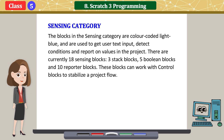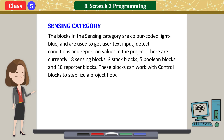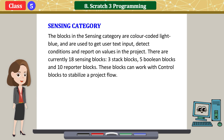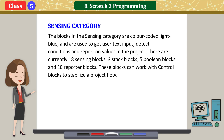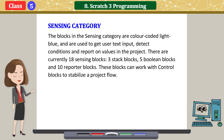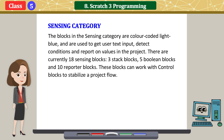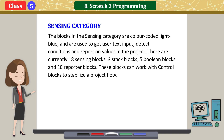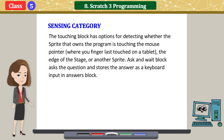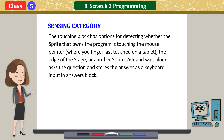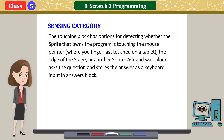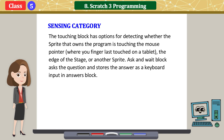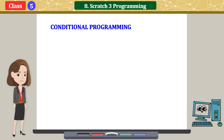Sensing category: the blocks in the sensing category are color-coded light blue and are used to get user text input, detect conditions, and report on values in the project. There are currently 18 sensing blocks — 3 stack blocks, 5 boolean blocks, and 10 reporter blocks. These blocks work with control blocks to stabilize a project's flow. The touching block detects whether the sprite is touching the mouse pointer, the edge of the stage, or another sprite. The 'Ask and Wait' block asks a question and stores the answer as keyboard input in the answers block.